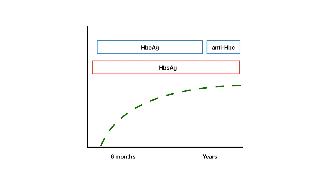Now this is the second scenario, which is when a person does not recover from the infection. Similar to the previous graph, surface antigens form, but these linger for a longer period of time as you can see in this red box. E antigens also form and seroconvert into antibodies, and the IgM core antibodies initially form and later become IgG antibodies. But as you can see, no surface antibodies are formed, which indicates that the person has a chronic infection.